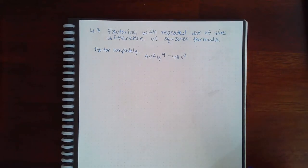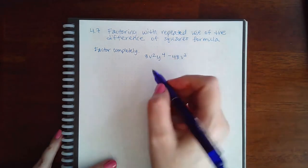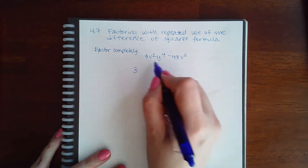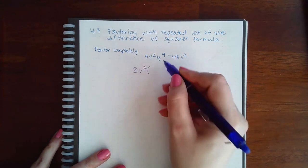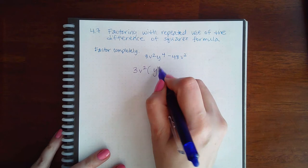Here we have 4.7, factoring with repeated use of the difference of squares formula. First, I need to factor out my GCF, which is 3v², and that leaves me with y to the fourth minus 16.